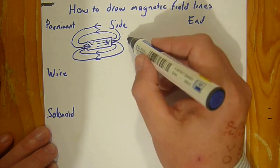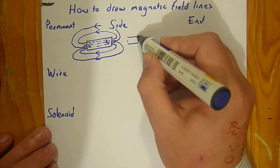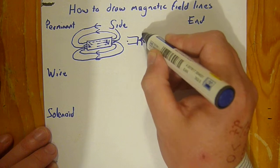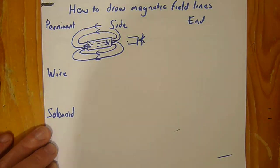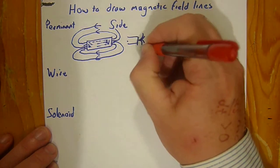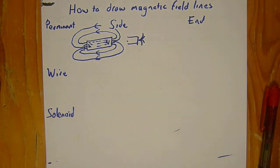Some things that students do wrong: for the north pole, they have all the field lines come from a single point for some reason. This is wrong.